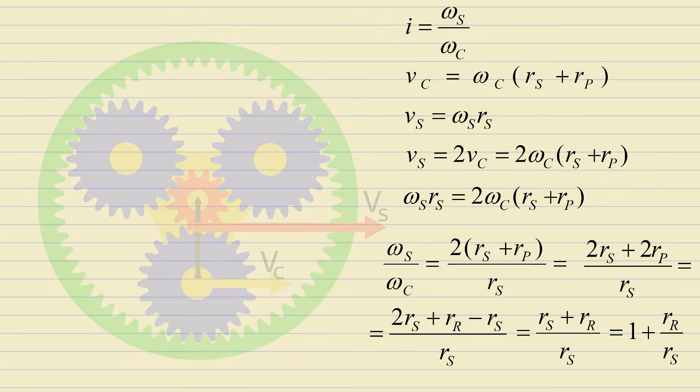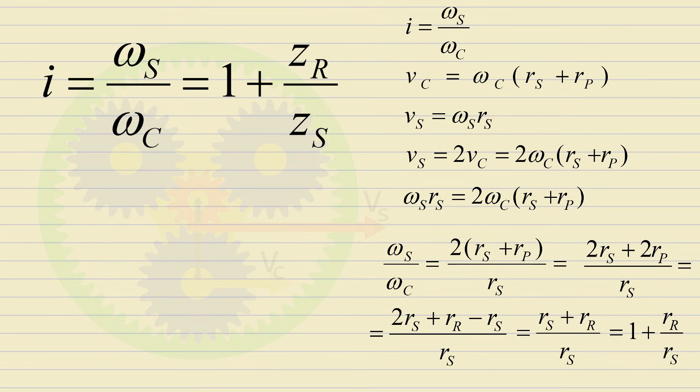Since the radii are proportional to the number of teeth, this can be rewritten as. In our example, zr is 60 and zs is 12. So the gear ratio is 6.